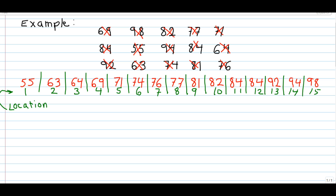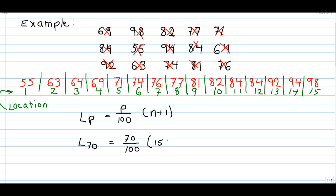To calculate the Pth percentile, the formula is L subscript P is equal to P over 100 times N plus 1. So for this example, I want to find the 70th percentile. So I do L subscript 70, and that would be 70 over 100. There are 15 numbers, so N equals 15 plus 1. That would be equal to 0.7 times 16. If you use a calculator, you get 11.2.